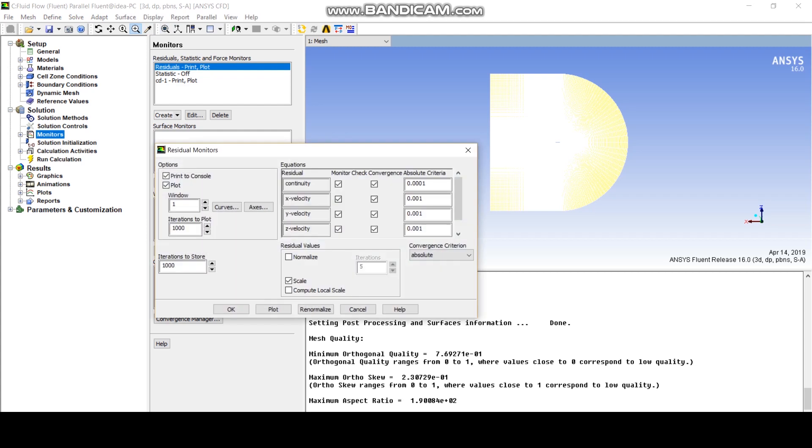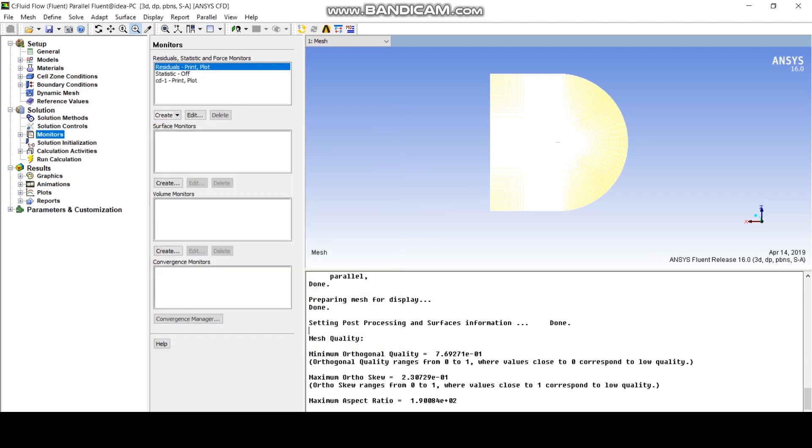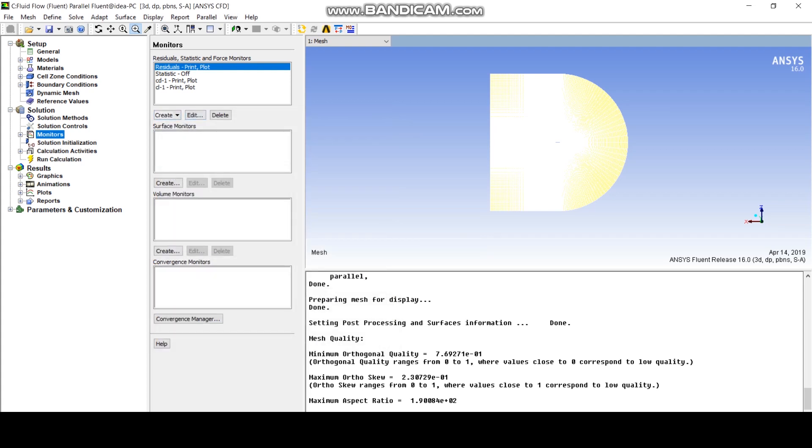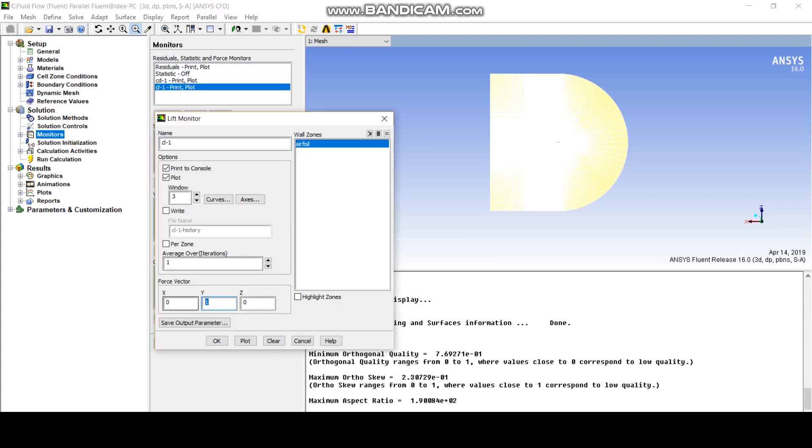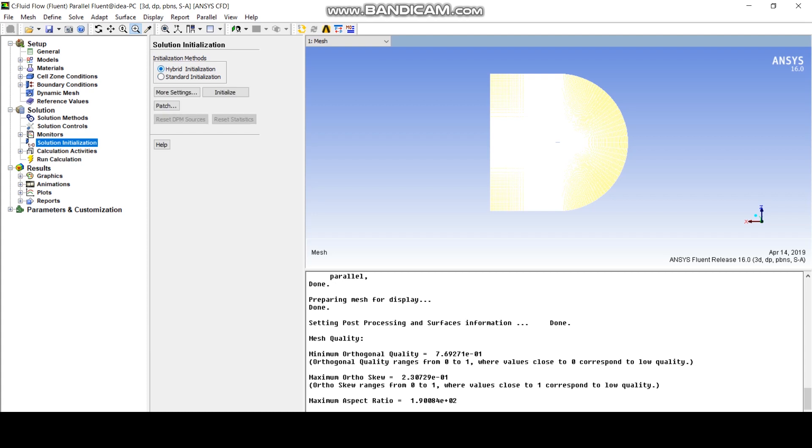Finally, you can choose your residuals which is the tolerances for your residuals. A 10 power minus 4 is considered as an acceptable engineering solution, although 10 power minus 6 is a good solution. And you also monitor your lift and drag residuals. So once you've set up everything, you can go to the solution initialization. And basically, this means that you initialize the solution in your domain to a value. And once this is done, your solution is set and you finally go to solve.